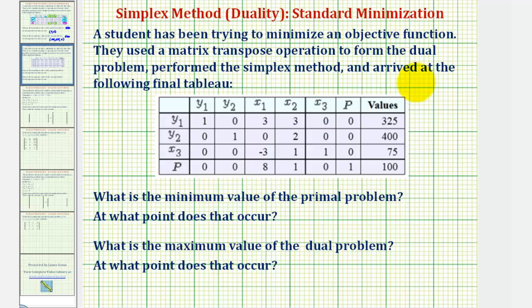Let's begin by looking at the variables associated with each column. Notice how we have y1 and y2 here. This indicates that the objective function of the dual problem would contain the variables y sub 1 and y sub 2.